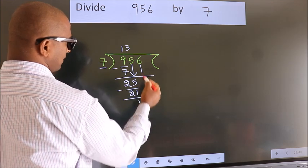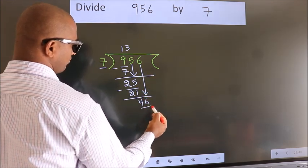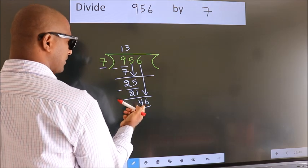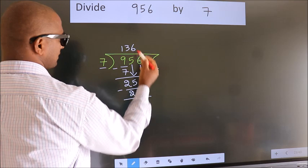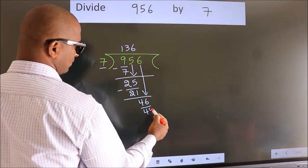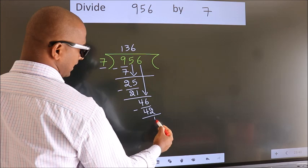After this, bring down the next number. So, 6 down. So, 46. A number close to 46 in the 7 table is 7 sixes, 42. Now we subtract. We get 4.